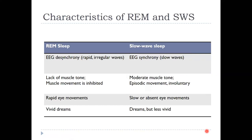Just to break down the comparison: in REM you see desynchrony, very similar to the EEG when you're awake, whereas in slow wave sleep — stages three and four — you see synchronous activity with big slow waves. In REM, muscle movements are inhibited except for very large twitches that get through. In slow wave sleep, you do see some muscle tone and involuntary movements. In REM, you see the rapid eye movements; in slow wave sleep, you might see no movement or very slow eye movements. In REM, you tend to report very vivid dreams; in slow wave sleep, dreams tend to be less vivid, more picture-like.